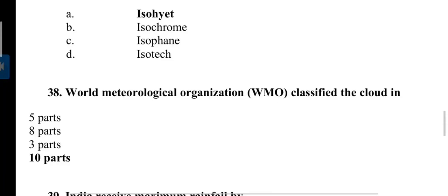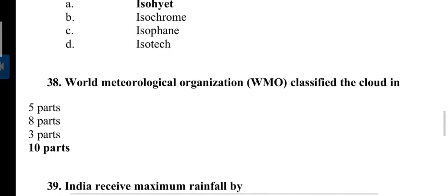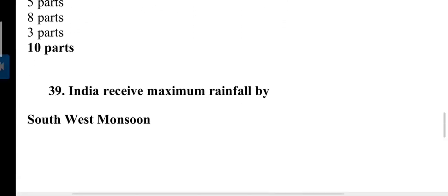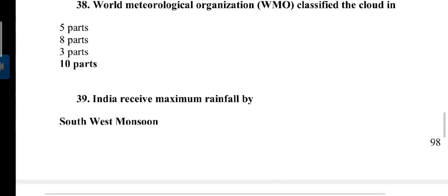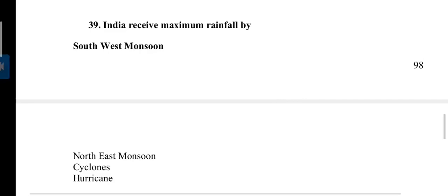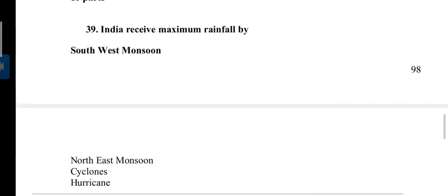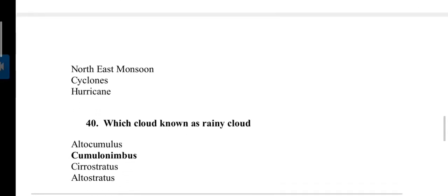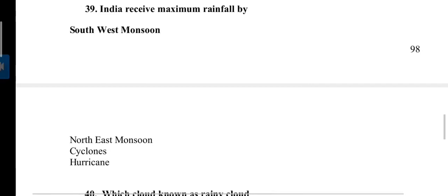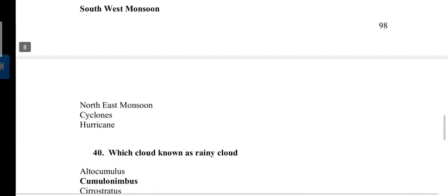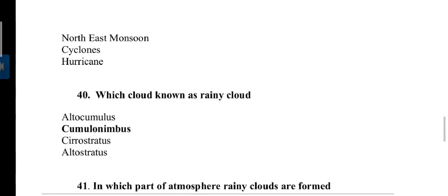Imaginary lines that represent equal rainfall are termed isohyets. Isophanes are lines connecting points of similar seasonal phenomenon, while isotachs are imaginary lines connecting points of equal wind velocity. World Meteorological Organization (WMO) is situated in Geneva, Switzerland, established in the year 1950. It classified clouds into 10 parts. India receives maximum rainfall by southwest monsoon. Southwest monsoon is a source of 75% of rainfall in India.